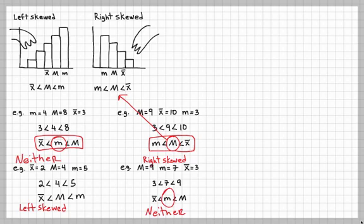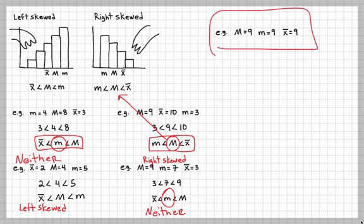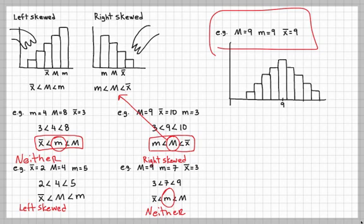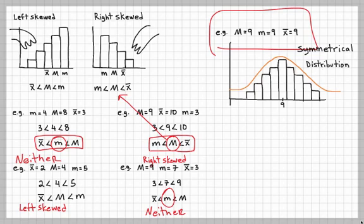One final example: the median is 9, the mode is 9, and the mean is 9. They're all the same. That means the distribution is symmetrical on 9. You've probably seen this as a bell curve — a normal distribution. Because the mean, median, and mode are all the same, it's a symmetrical distribution — that's a special case. You should now be able to handle left skewed, right skewed, and symmetrical distribution problems.